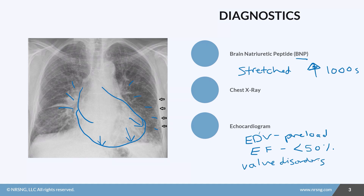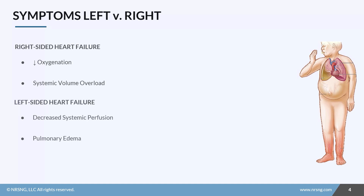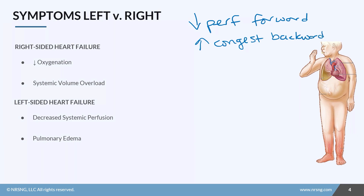Let's look at what this patient actually looks like in clinical practice. If you get nothing else about heart failure, this is the part you've got to get: there is decreased perfusion forward and increased congestion backwards. In right-sided heart failure, forward is the lungs, so we have decreased perfusion to the lungs — oxygenation problems, struggling with activity due to insufficient blood flow and gas exchange.